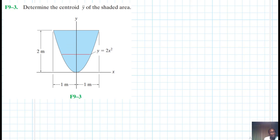But you can try the other one and see which one you think is faster. So I'll go with the horizontal strip. It has a thickness dy.